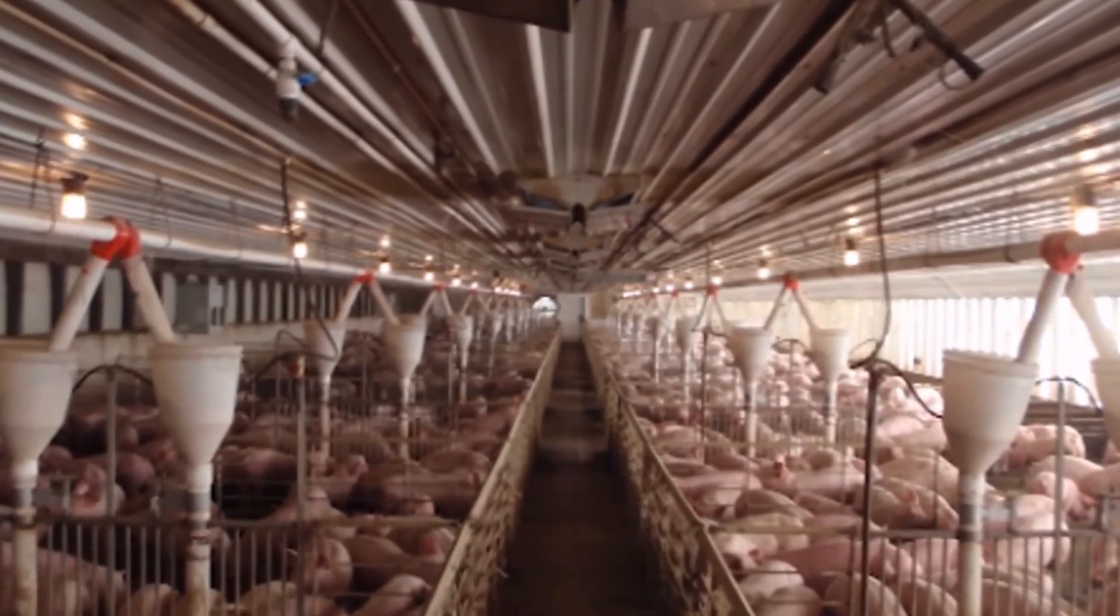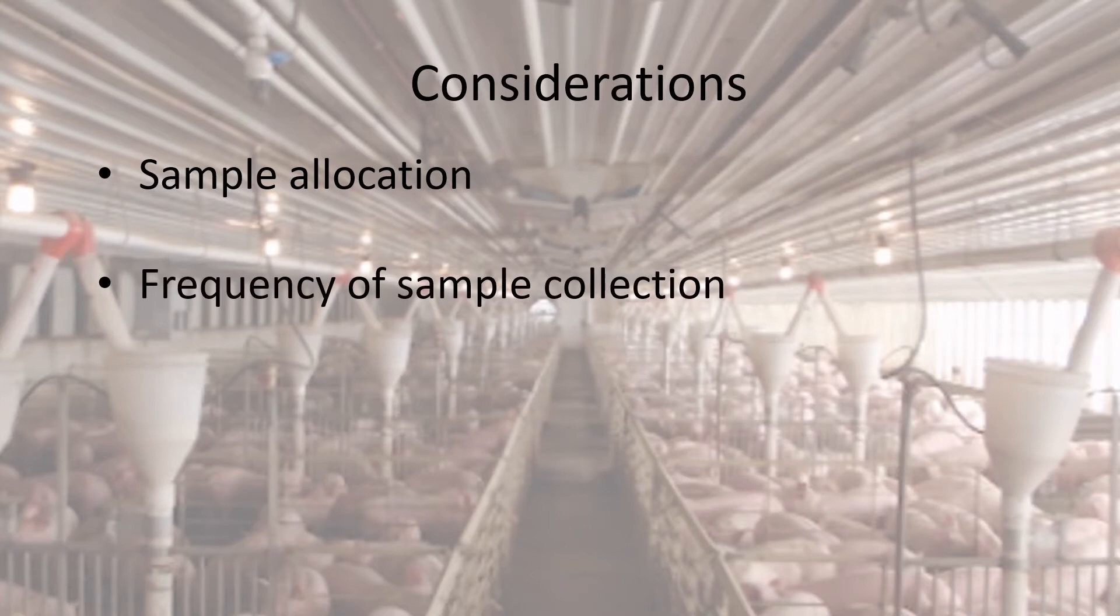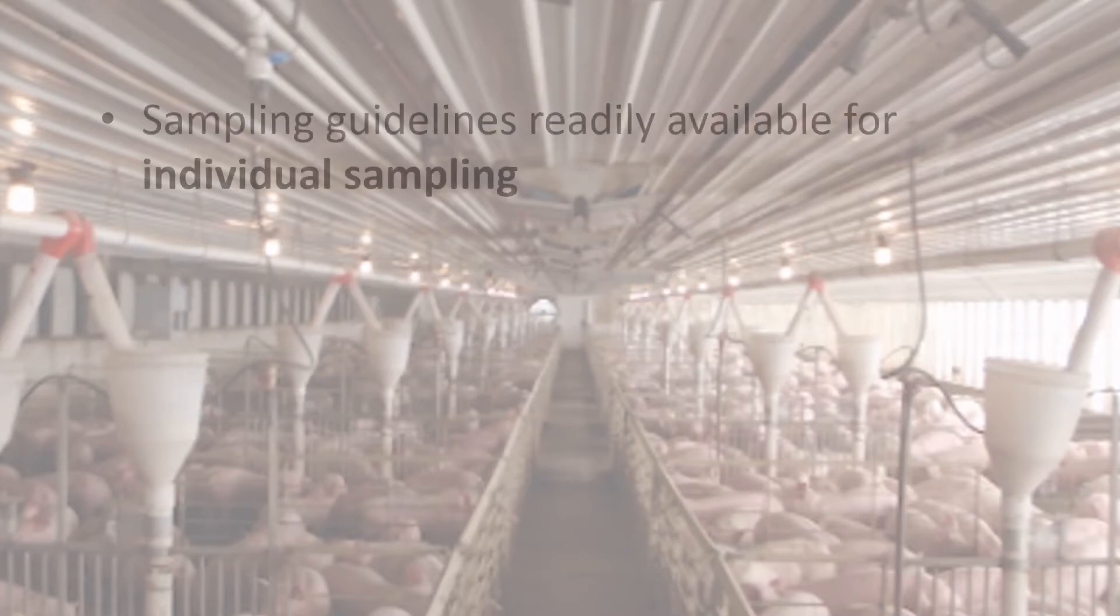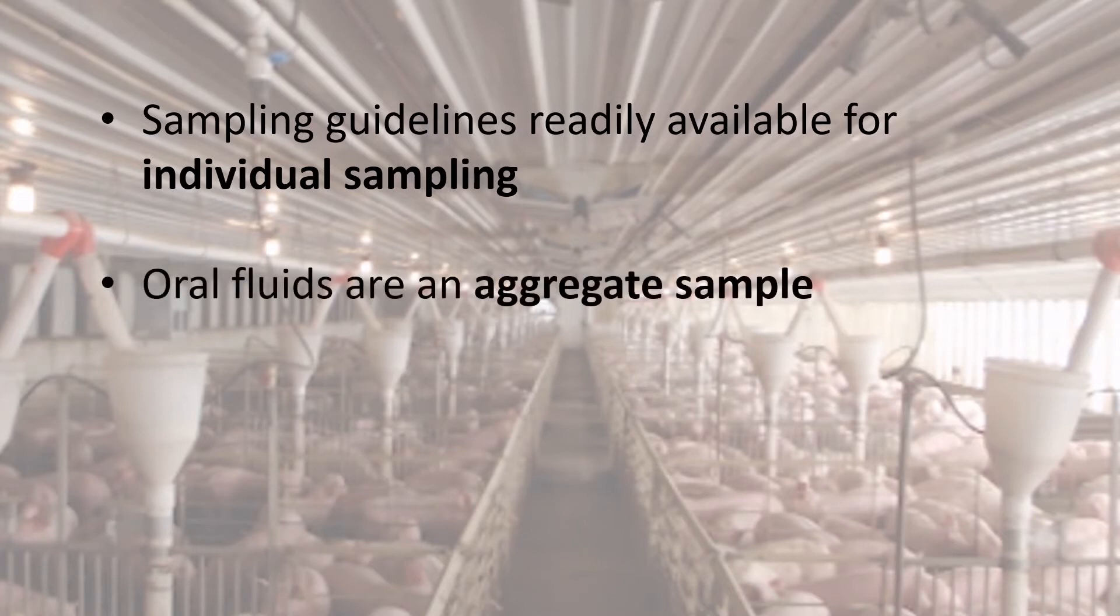When planning to collect oral fluids, it is important to refer to guidelines that help determine the pattern of rope placement within a barn, frequency of sample collection, and the number of ropes that should be hung within a swine operation. Many sampling guidelines are available for individual sampling methods, such as blood draws and nasal swabs. But oral fluids are an aggregate sample, meaning one sample contains oral fluid from many pigs within a pen. Therefore, different sampling guidelines must be used.